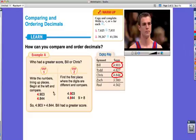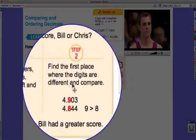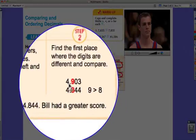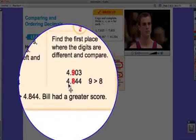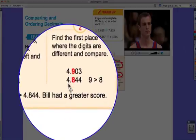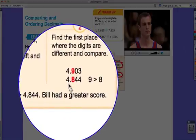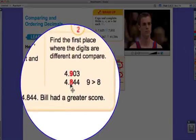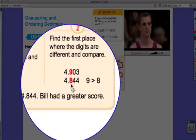Find the first place where the digits are different and compare. As you can see here, if we start on the left-hand side, four and four are exactly the same. So then we want to move over to the next place values, which is here, and we notice that nine and eight are different.